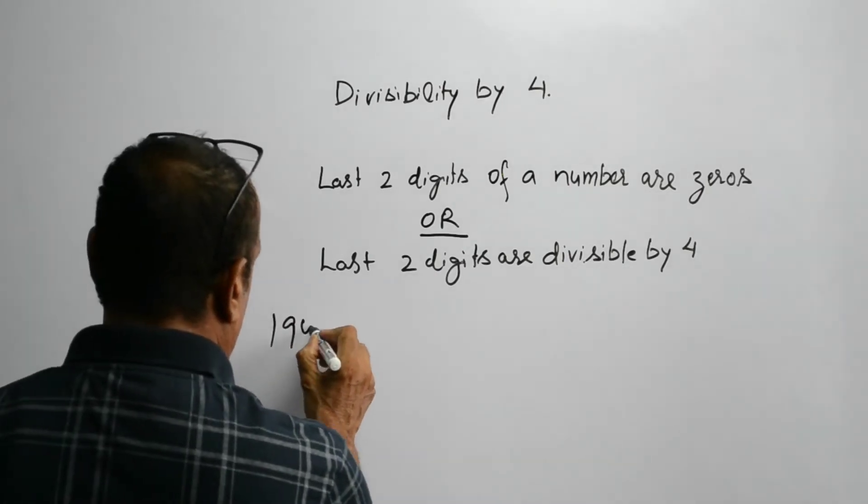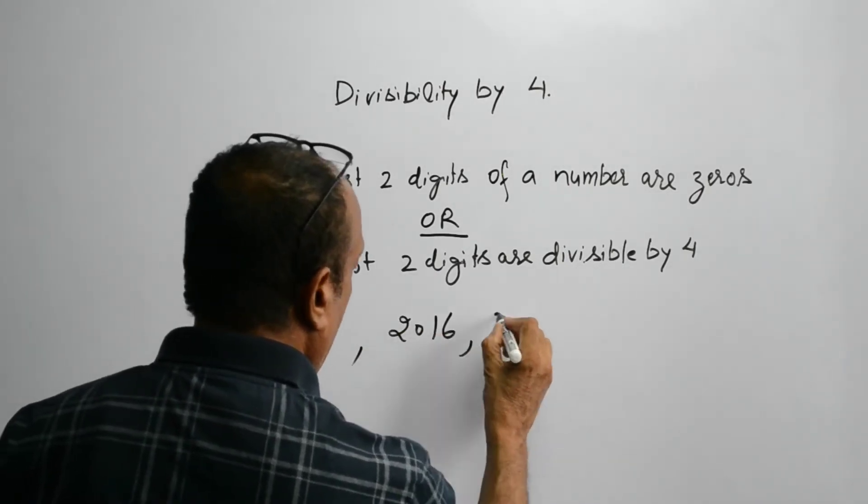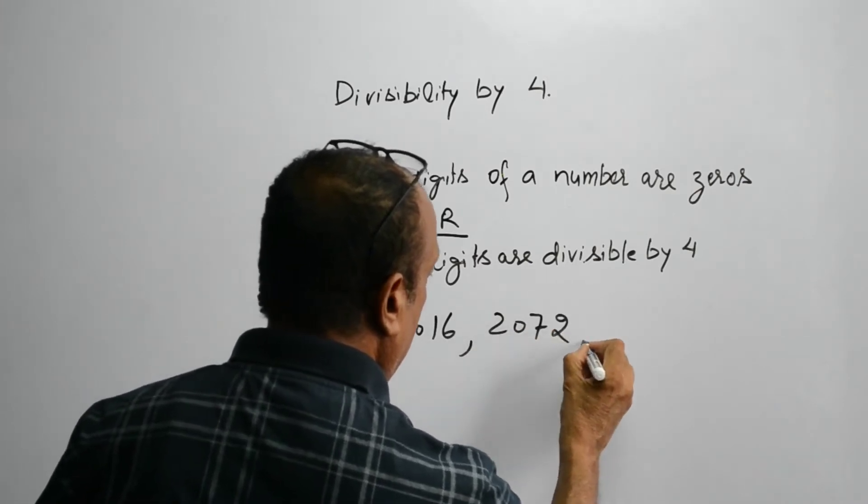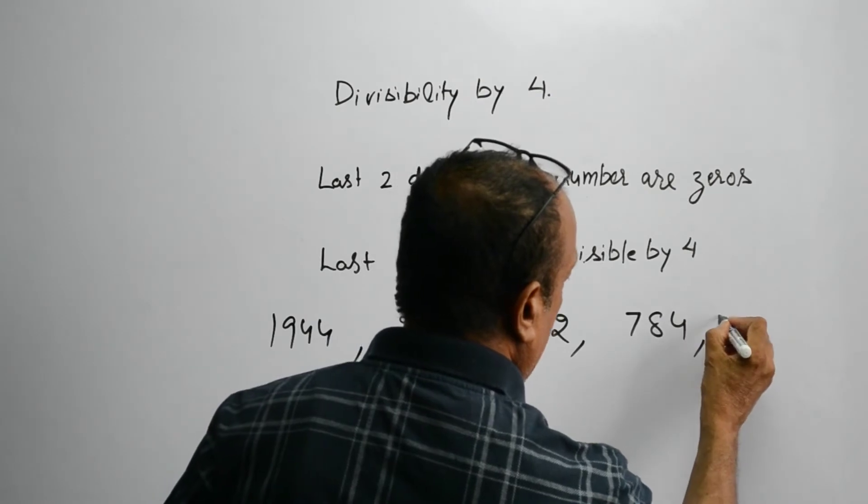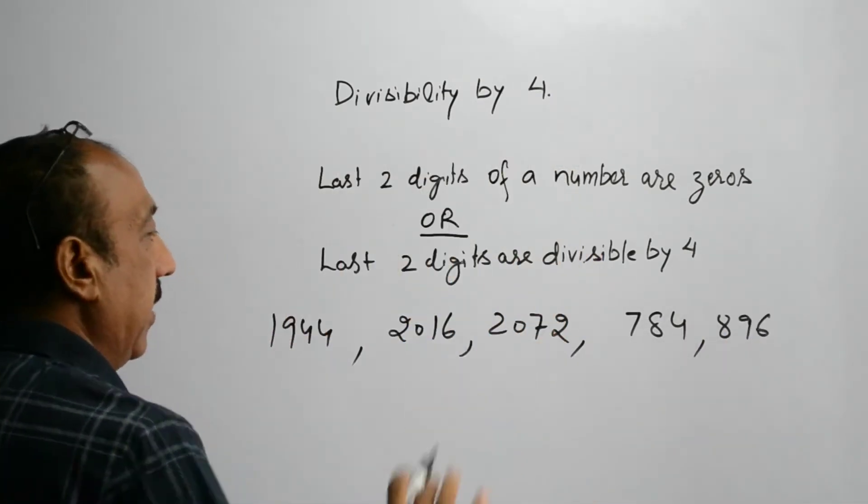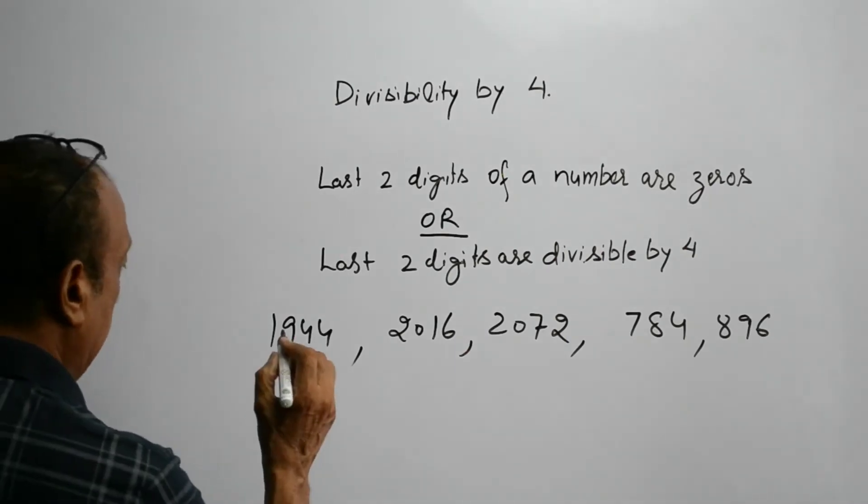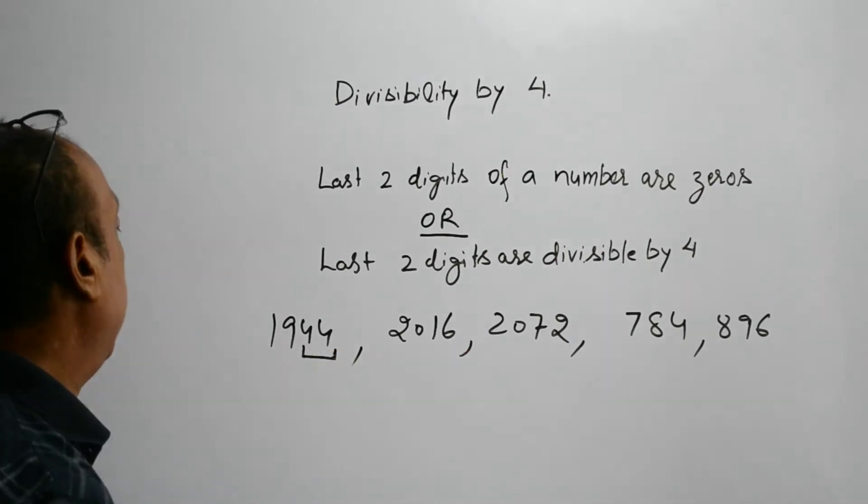So, the numbers 1944, 2016, 2072, 784, and 896, all these years are leap years because we have to see only the last two digits. 44 is divisible by 4.